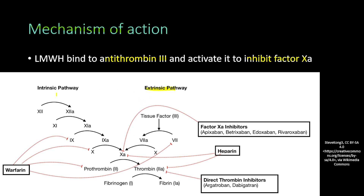In the clotting cascade, we have the extrinsic pathway and the intrinsic pathway, and both lead to the activation of factor 10, then factor 2, then factor 1. The low molecular weight heparins work to inhibit the activated form of factor 10, stopping the coagulation cascade and producing their anticoagulant effect.